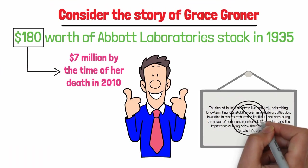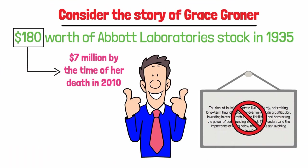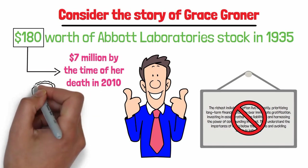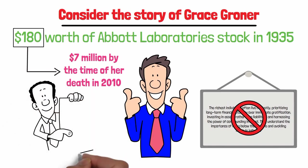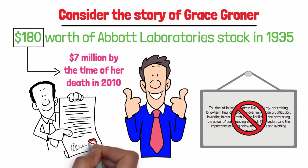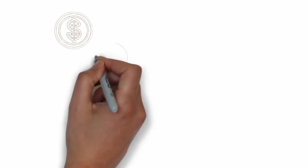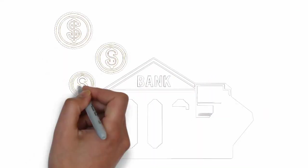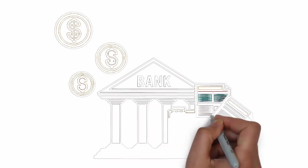These principles are not exclusive to the wealthy. Anyone can incorporate them into their financial habits. For instance, tracking your spending, creating a realistic budget, or building up savings are all attainable goals. You might also consider setting up auto-pay for recurring bills or opening a high-yield savings account.